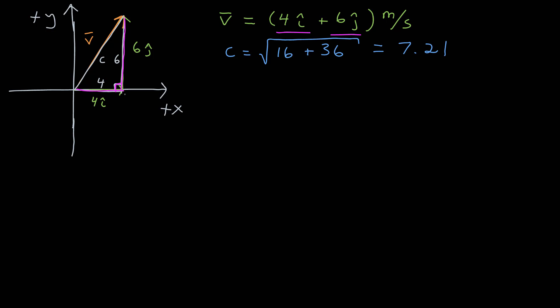and I know the length of this side is 6 and the length of that side is 4. Using the Pythagorean theorem, then, the length of side c is the square root of 4 squared, which is 16, plus 6 squared, which is 36, which is the square root of 52, which is 7.21. That's telling me the magnitude of my velocity vector.